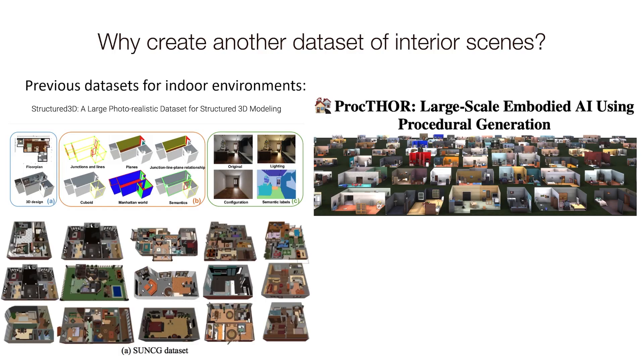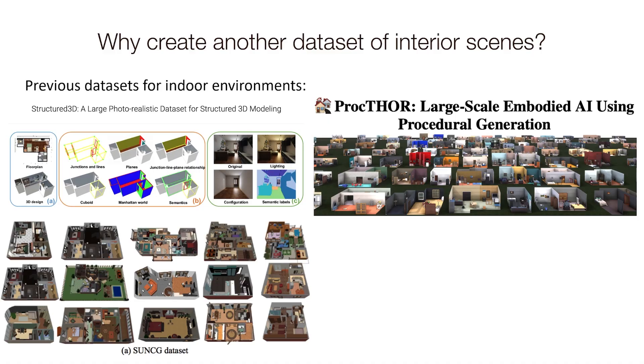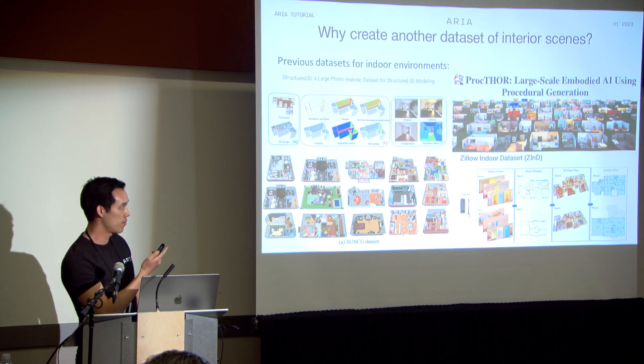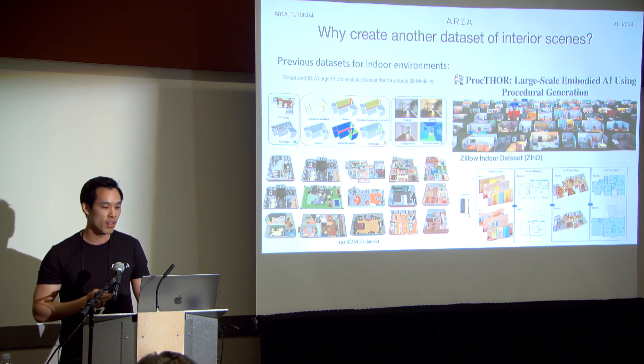Then we've got SunCG - a bit older and larger at 45,000 scenes, but the annotations are lacking, with only depth maps and volumetric ground truth, which doesn't enable all the research we'd like to facilitate. And it's not currently available due to some legal issues. Then there's the Zillow indoor dataset, a real-world dataset collected from panoramic images stitched into floor plans, but it's only 2,500 scenes and does not provide egocentric trajectories. Most of these datasets are just a bit small, and as we've seen with ChatGPT, GPT-4, or your favorite LLM, large datasets are really enabling remarkable gains in machine learning.